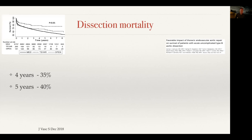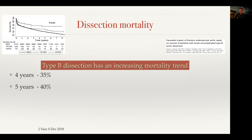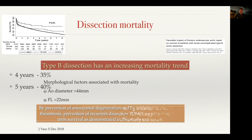When you look at dissection mortality — this is a survival curve looking at patients treated with medication, TEVAR, or open surgery — four-year survival is 35%, five-year survival 40%. Essentially, whatever you do for these patients, if you don't treat them optimally initially, they have an increasing mortality trend. What you're trying to do is identify patients who are at risk of progression. Morphological factors in this subset: big aorta and big false lumen. If you can identify high-risk patients and prevent aneurysmal degeneration by thrombosing the false lumen and stimulating positive remodeling, you're likely to improve their long-term survival.